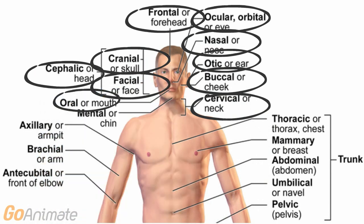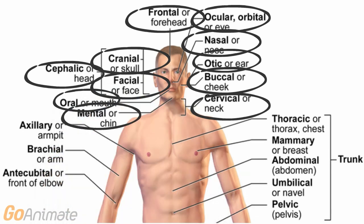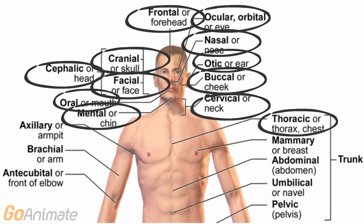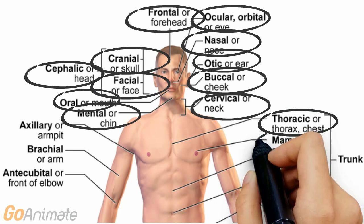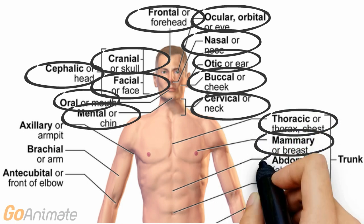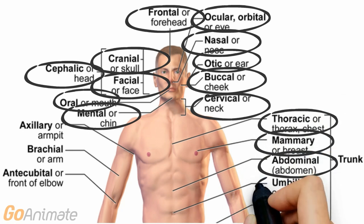There is also the mouth or oral region and the chin or mental region. The trunk consists of the following regions: thoracic, mammary, abdomen, umbilical and pelvic.